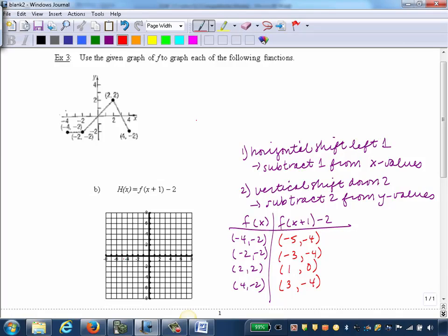So we've got negative 5, negative 4; negative 3, negative 4; 1, 0; and 3, negative 4. And now we know the shape because it's given above here. The parent function is given above. So we'll just connect those points with the appropriate shape.